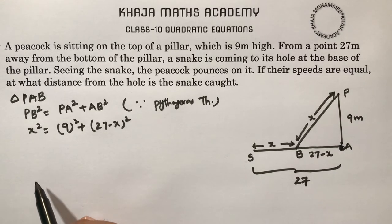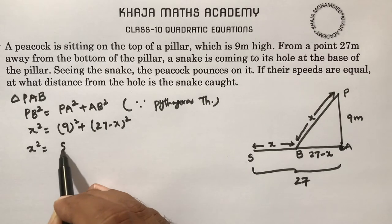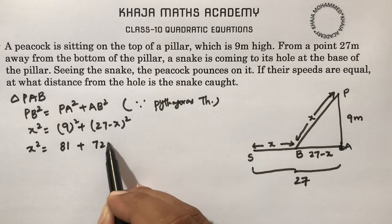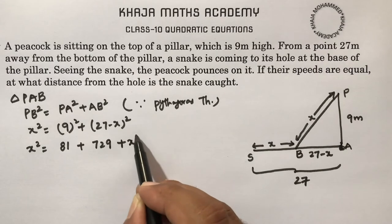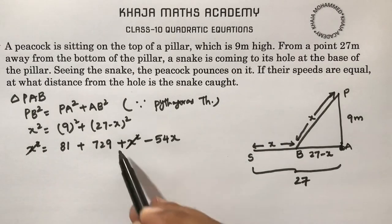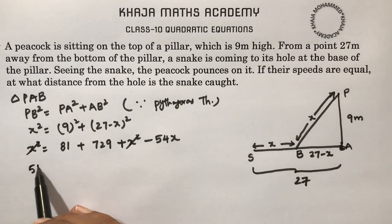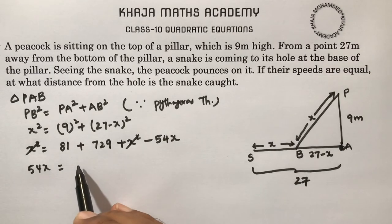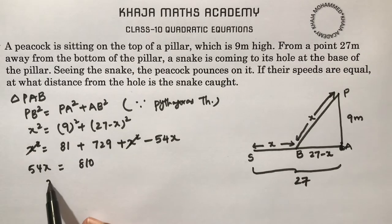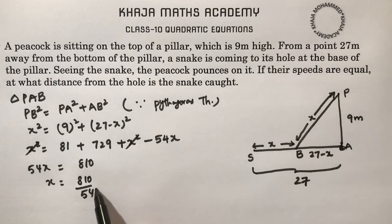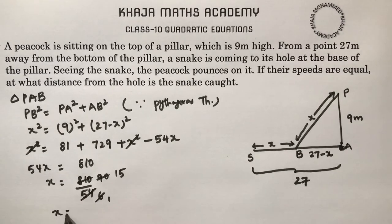Expanding: x squared equals 729 plus x squared minus 2 times 27 times x, which gives 54x. The x squared terms cancel, so 54x equals 729 plus 81, which is 810. Therefore x equals 810 divided by 54, giving x equals 15.